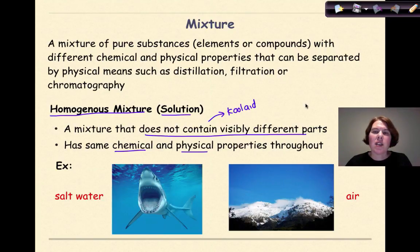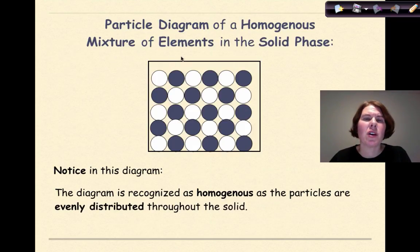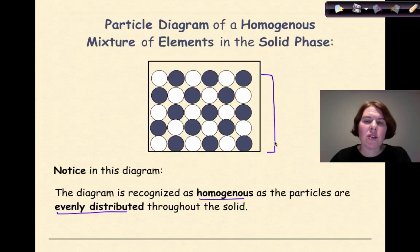Another type of homogeneous mixture is an alloy. And we see alloys as a mixture, a homogeneous mixture of metals. So when metals are mixed together and then have a uniform composition throughout, those are known as alloys. Here's a particle diagram of a homogeneous mixture of elements in the solid phase. Notice in this diagram, the diagram is recognized as homogeneous as the particles are evenly distributed throughout the solid. So when I'm looking at this particular diagram, I know that this is homogeneous because I can see a pretty good pattern among these different circles here that's showing me it's evenly spread throughout. So this is a good representation of a homogeneous mixture.